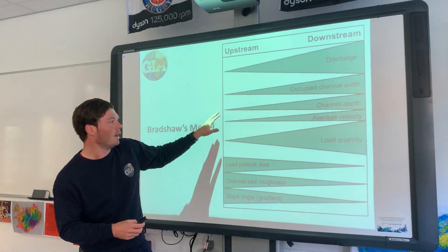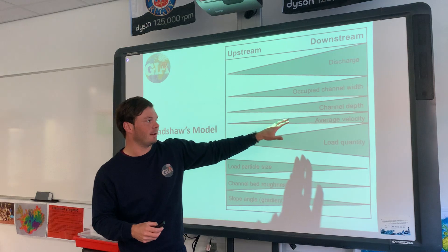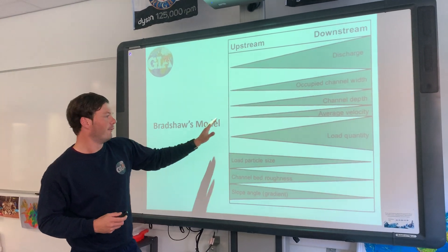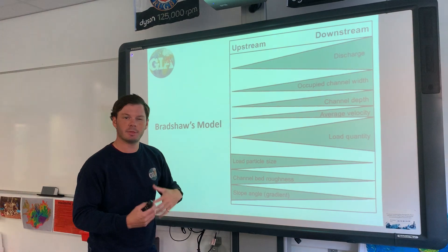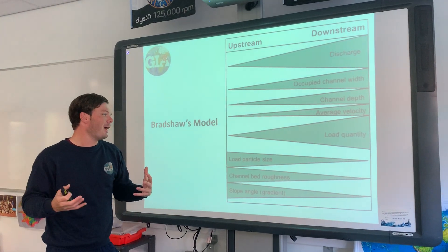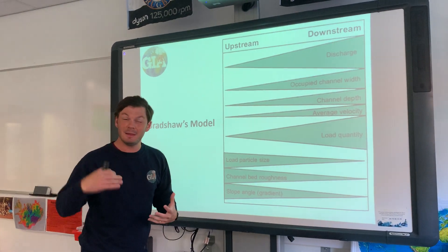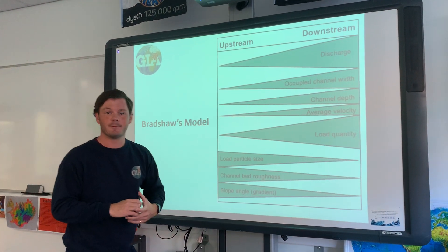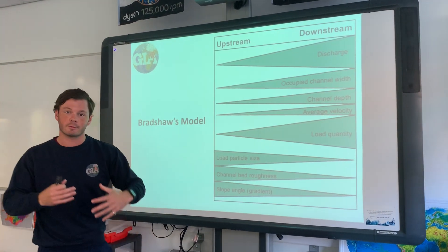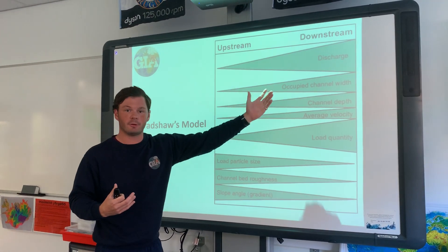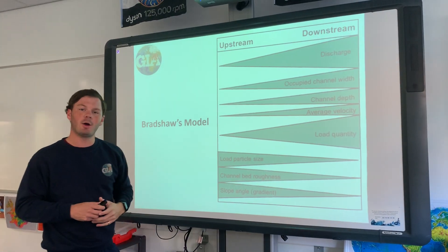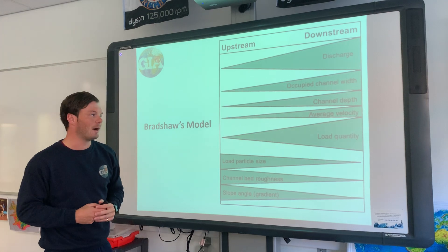We can see here the channel depth starts to increase gradually as we make our way towards the river mouth. The velocity, interestingly, — we might think the velocity in the upper course of the river will be high — that is not the case, even though there is high relief. There is a lot of friction in play; the water slows down as there are lots of rocks and not that much water. The discharge is lower, so the velocity increases as we make our way towards the river mouth.